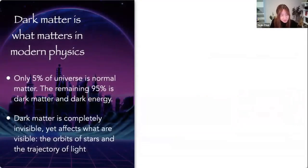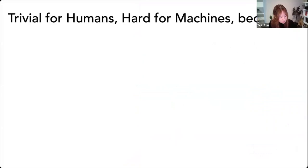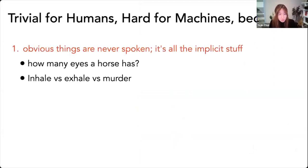And dark matter is what does matter in modern physics. It turns out only 5% of the universe is normal matter that we can see and interact with. And the remaining 95% is dark matter and dark energy. Dark matter is completely invisible, yet scientists speculate that it's there because it influences the visible world, even including the orbits of stars and the trajectory of light. So for language, normal matter is like the visible text, such as words. And then dark matter is the unspoken rules about how the world works, which influence the way people use and interpret the language. So that includes common sense, and even social norms and morals as well.